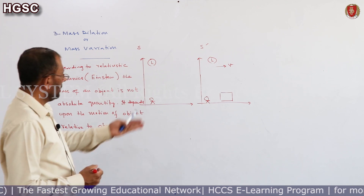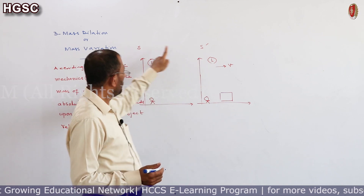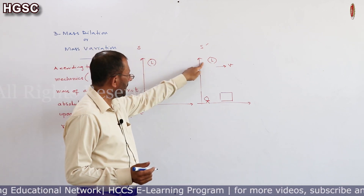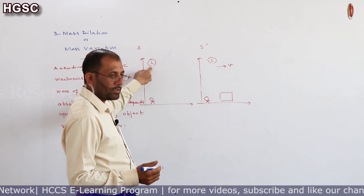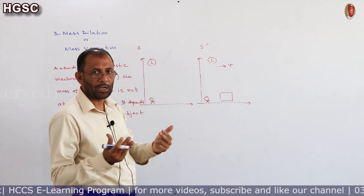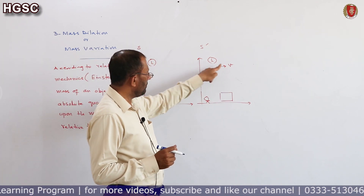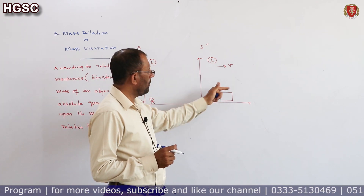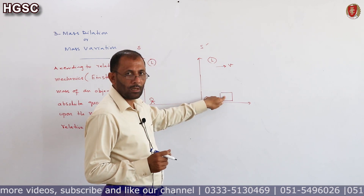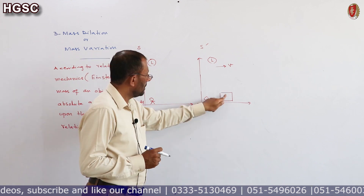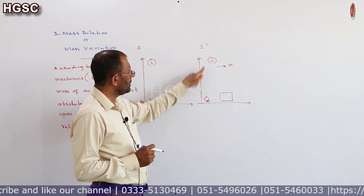Look at the diagram. This is frame S′ and this is frame S. Frame S′ is moving with uniform velocity V relative to frame S, meaning both frames are inertial. There is an object in the moving frame, and that frame is moving with velocity V. Here is the observer in the frame of reference of the object.